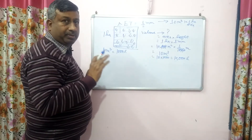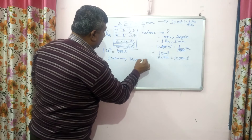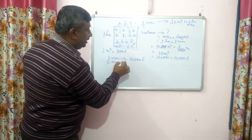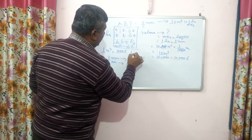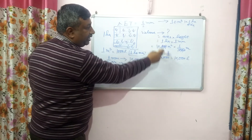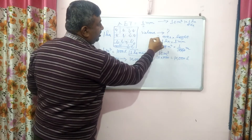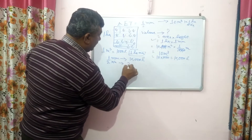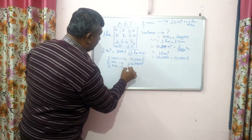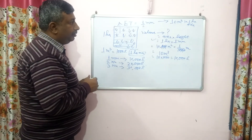Converting to litres: since one cubic metre equals one thousand litres, ten cubic metres equals ten thousand litres. So if there is a one millimetre loss of water, ten thousand litres of water is lost from the field per hectare. If it is two millimetres, then twenty thousand litres; if three millimetres, then thirty thousand litres. In general, there is one to two millimetres of water loss, and in hot summer it can be about seven millimetres.